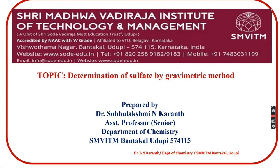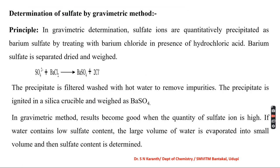In this video, I am explaining the determination of sulphate by gravimetric method. The basic principle is that sulphate ions are quantitatively precipitated as barium sulphate by treating with barium chloride in the presence of hydrochloric acid.